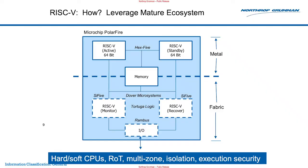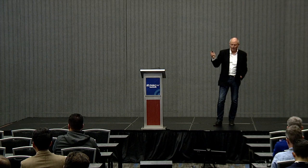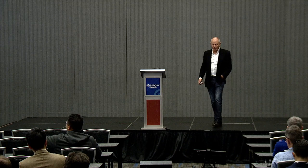Leveraging the mature ecosystem: my entire VMC can fit into a PolarFire SoC. The second 64-bit RISC-V core runs a redundant copy of my OFP flight software. Down in the fabric, I drop two soft-core SCI-5s to implement monitoring and recovery functions. IO is handled by Rambus using their CMRT — crypto manager root of trust — for hardware boot. The fabric is locked down with Tortuga Logic. Dover Microsystems handles execution intent, monitoring, and recovery. And HEX-5 is used for multi-zone security.